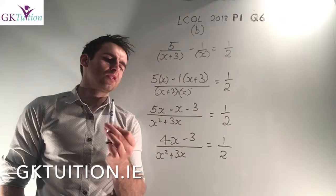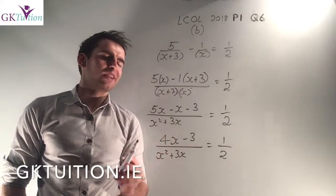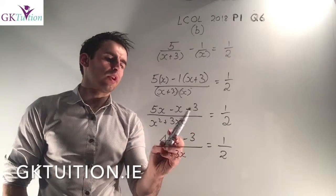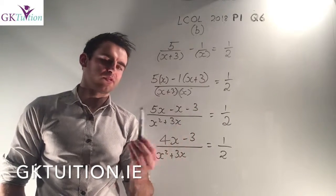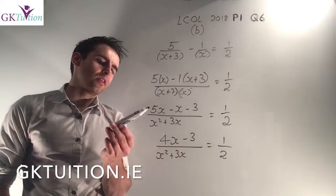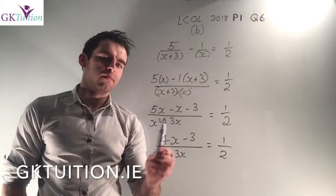Now on the top I can just multiply it. 5 by x is 5x, -1 by x is -x, -1 by 3 is -3. x by x is x² and x by 3 is 3x. On the top down I can group I've got 5x - x gives me 4x and then I've got a -3.